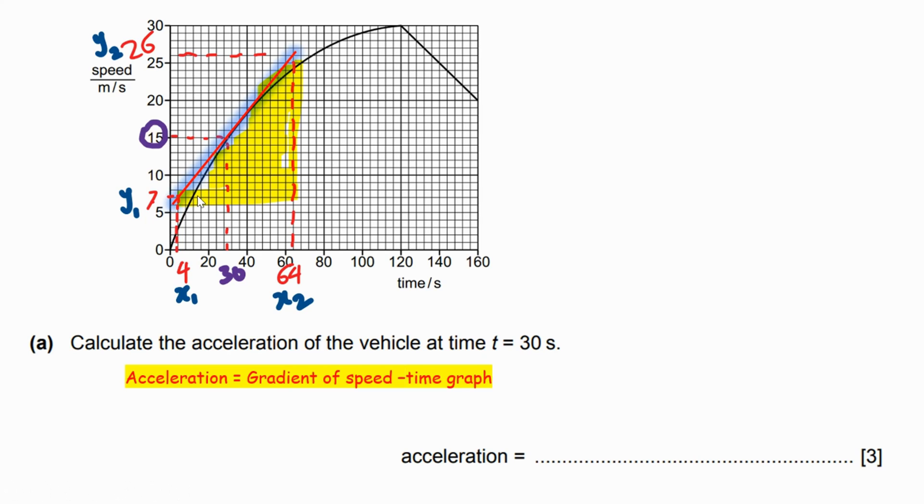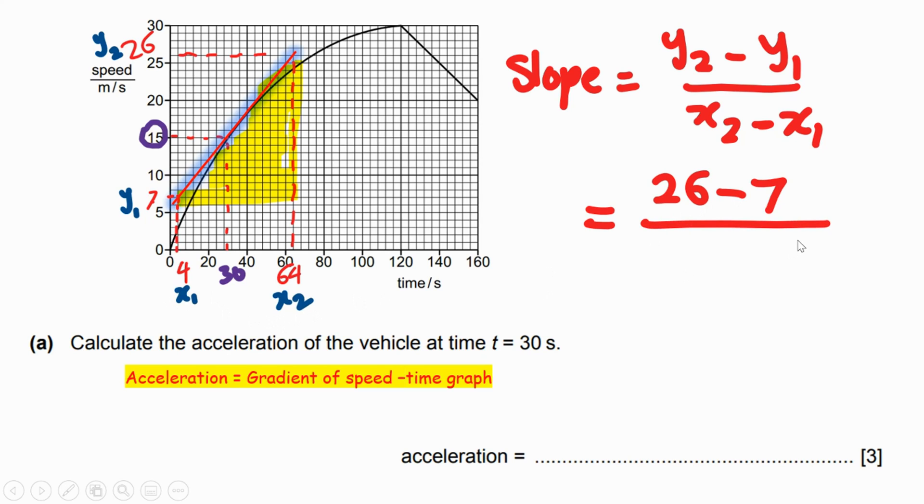Step two: the gradient or slope is the area here, this shaded triangular shape. You're going to calculate the gradient by finding the difference between the two values y2 and y1. The rise over run, slope or gradient equals y2 minus y1, the difference along the y-axis, divided by x2 minus x1, the difference on the x-axis. Then equals y2 is 26 minus 7 divided by the difference between 64 and 4. 26 minus 7 is 19 divided by 60.